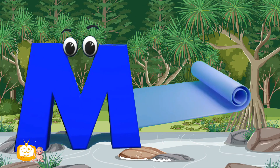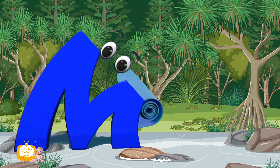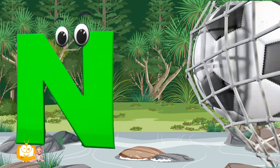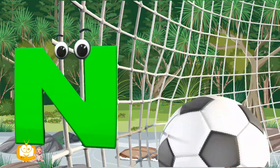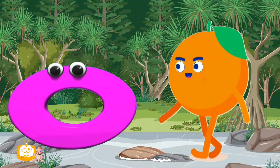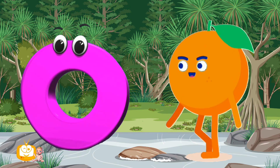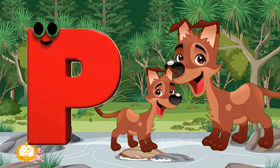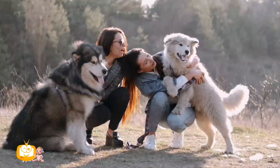M is for Mat, M-M-Mat. N is for Net, N-N-Net. O is for Orange, O-O-Orange. P is for Pet, P-P-Pet.